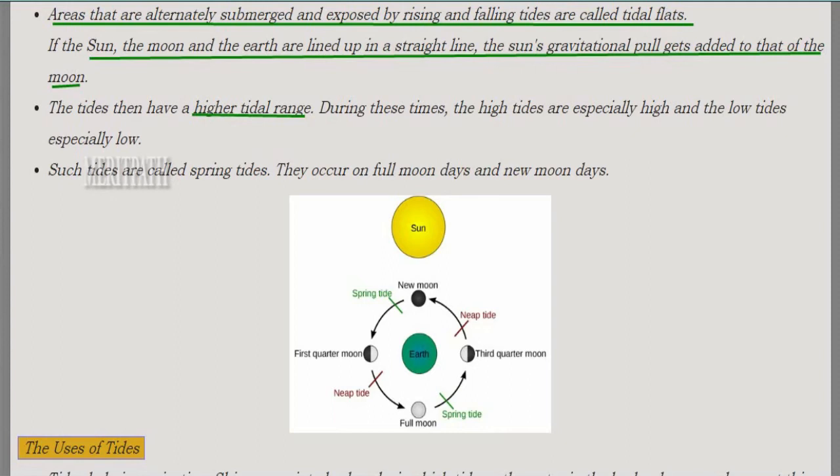When the sun, moon, and earth are lined up in a straight line, the sun's pull is added to that of the moon, so the tides have a higher tidal range — high tides are higher and low tides are lower. Spring tides occur on full moon days and new moon days.